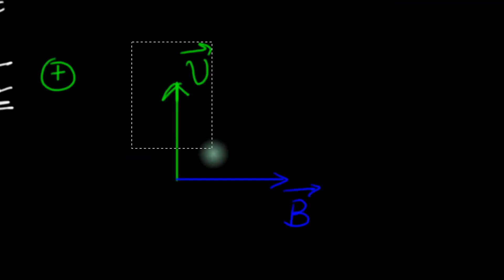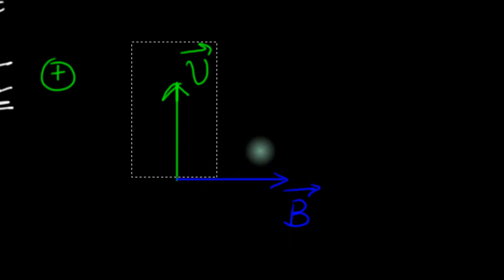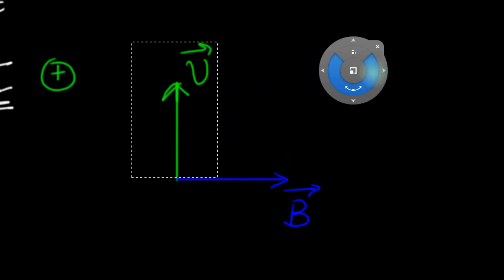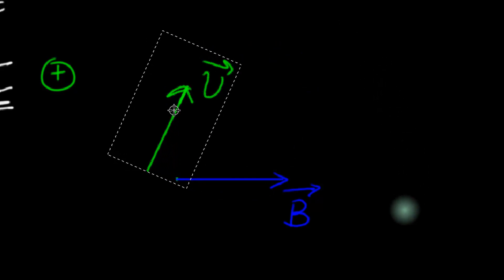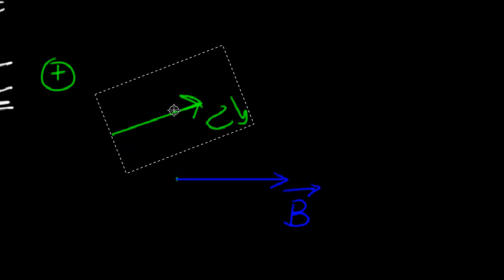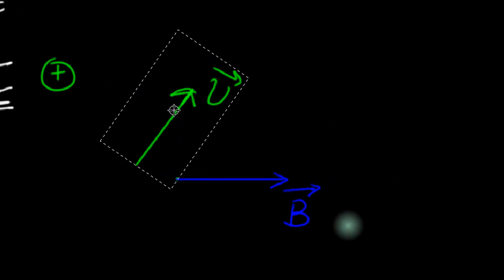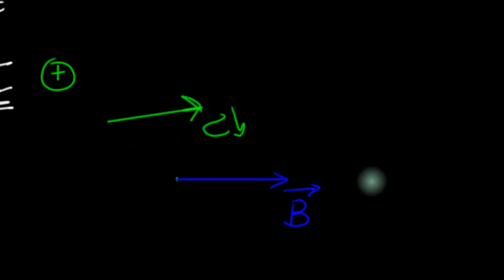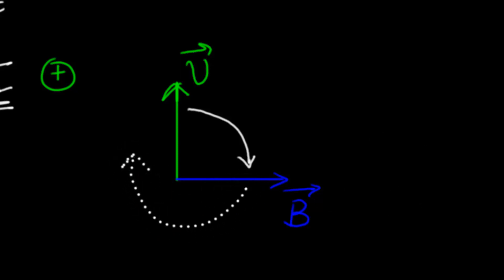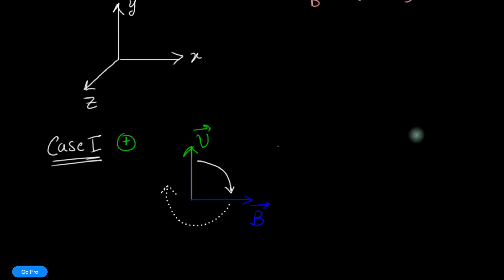I want you to think of v cross B, or any cross product, as a rotation. V is trying to rotate towards B. If you make v rotate towards B, notice that v would rotate this way — and that rotation is clockwise. If you complete that rotation, notice that this rotation is in the x-y plane.